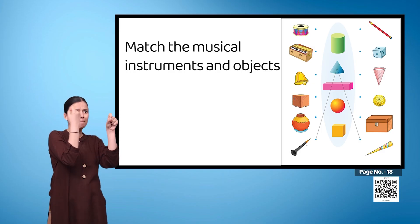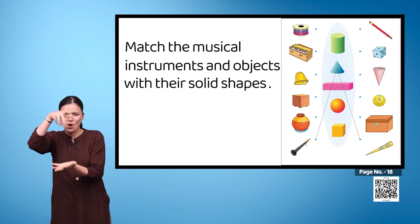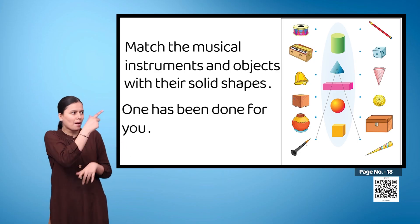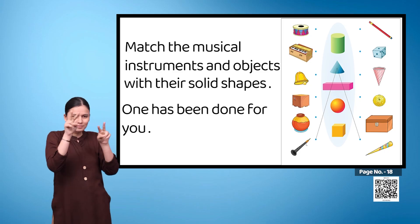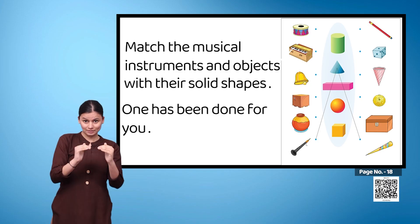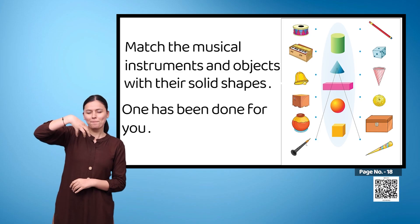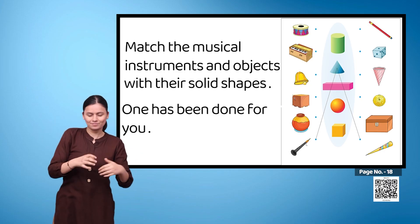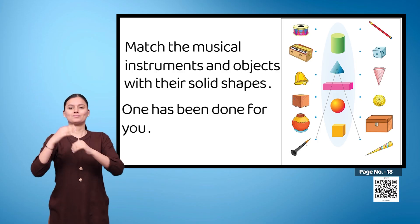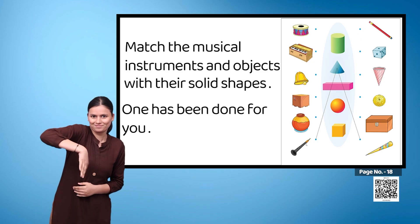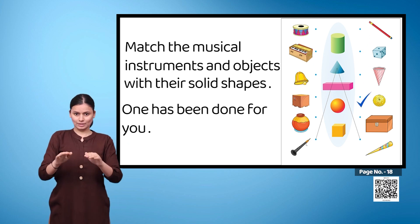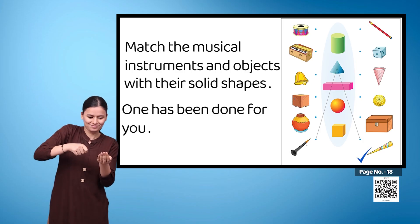Match the musical instruments and objects with their solid shapes. One has been done for you. On the left-hand side we have a drum, a harmonium, a bell, a cajon, a matka, and a Shehnai. On the right-hand side we have a pencil, then a dais, an ice cream cone, a lemon, a wooden box, and finally a paper cone.